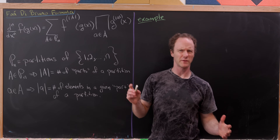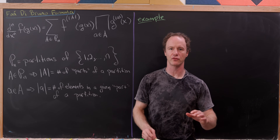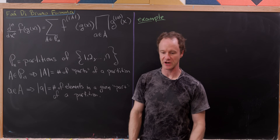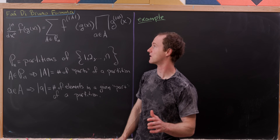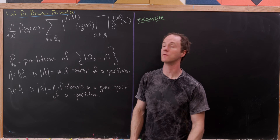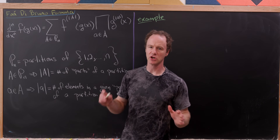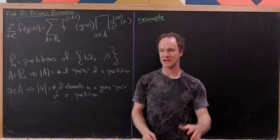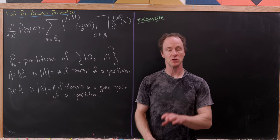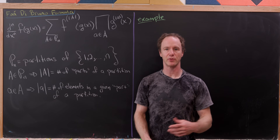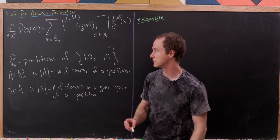Today I want to look at a rule that's kind of like a higher derivative version of the chain rule, and it's called the Faà di Bruno formula. So let's look at what it says, we'll unpack the parts, look at an example, and then finally sketch a proof.